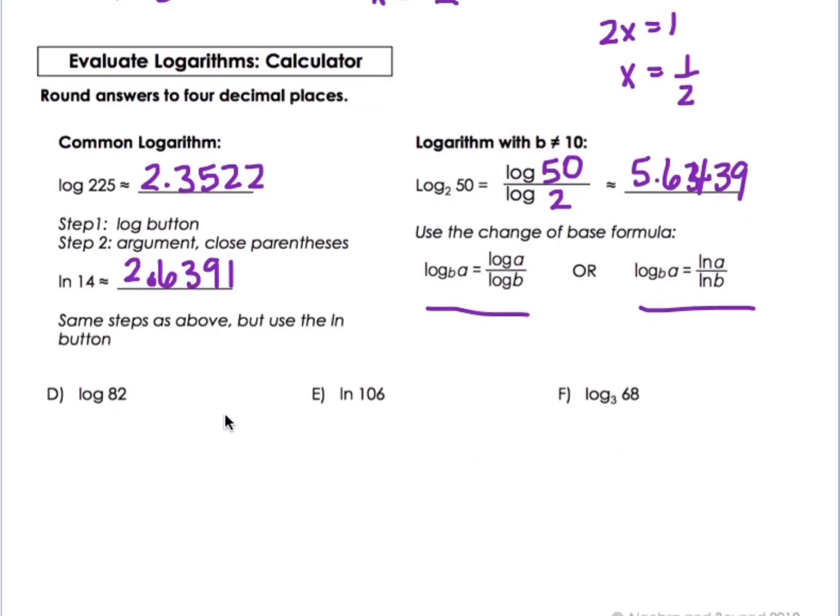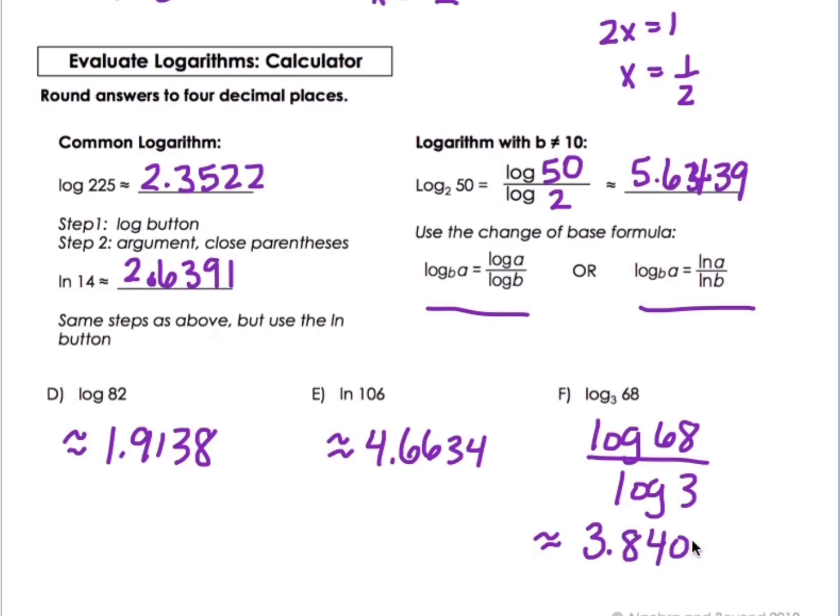So if you go to your calculator, you can type it in. And you would get, for this one, approximately 1.9138. Then you would do the natural log of 106. And you get 4.6634. And these are all approximate to four decimal places. And this one you'd have to rewrite on your calculator. Log of 68 divided by log of 3, which is approximately 3.8408. And there you have it.